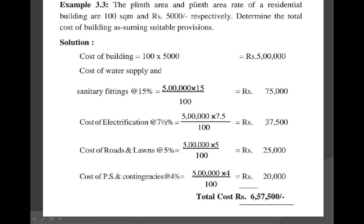Second provision: cost of electrification at 7.5%. Cost of electrification at 7.5% equals cost of the building multiplied by electrification percentage divided by 100, which is 5 lakhs into 7.5 divided by 100, equal to 37,500 rupees.